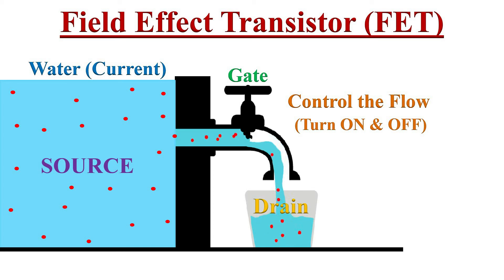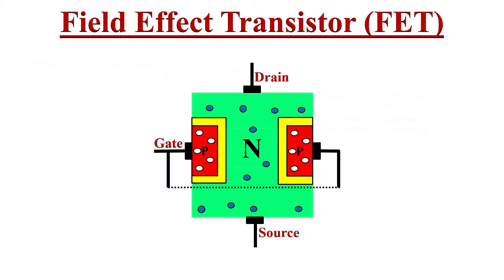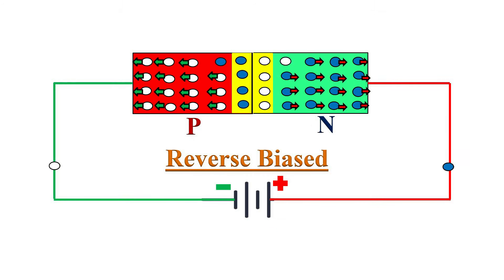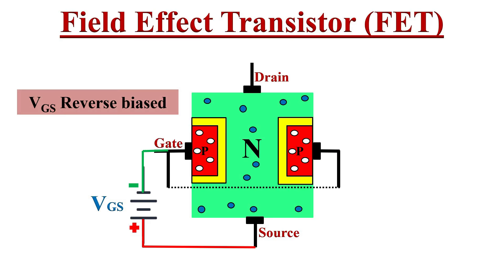The flow of water represents the flow of current from source to drain terminal, and this flow of water can be controlled by turning a knob called the gate. Similarly, if we apply a reverse biased voltage VGS between the gate and source terminal of an N-channel JFET, the current flow between drain and source can be controlled. In a PN junction, reverse bias increases the depletion region. So in this N-channel JFET, the gate-source PN junction is reverse biased, hence it increases the depletion region.